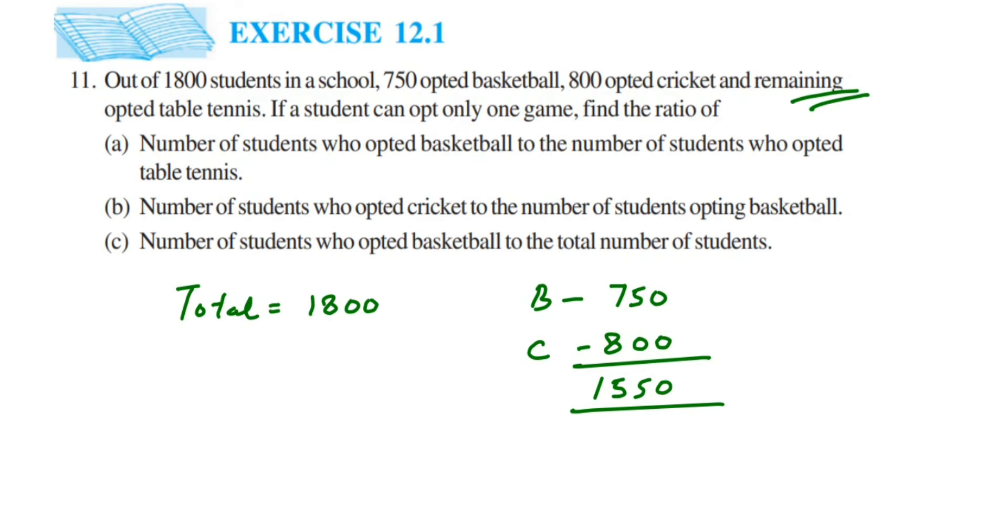Then how to find out the remaining students who opted for table tennis? So out of this total which is 1800, we're going to subtract this number 1550 who opted basketball and cricket. So when you subtract it, we'll get 250, so 250 students opted for table tennis.